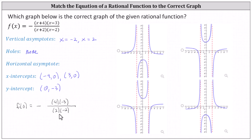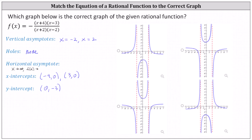Now let's determine the horizontal asymptote by finding the end behavior — specifically what happens as x approaches infinity. I'm going to multiply the binomial factors together. In the numerator we get x squared plus x minus twelve. In the denominator we have x squared minus four.